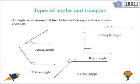Let's start our lesson with the types of angles and triangles. Let's look at the angles. An angle is an amount of turn between two rays with a common endpoint. This is the endpoint between these two rays. This is an acute angle and we call it an acute angle because it is less than 90 degrees.